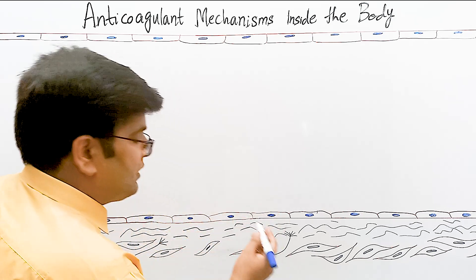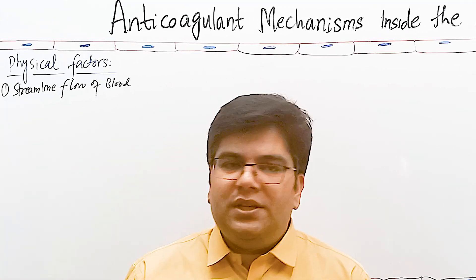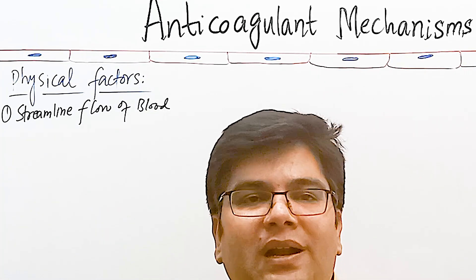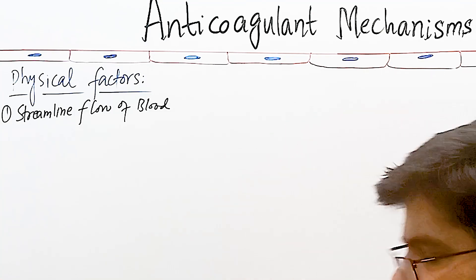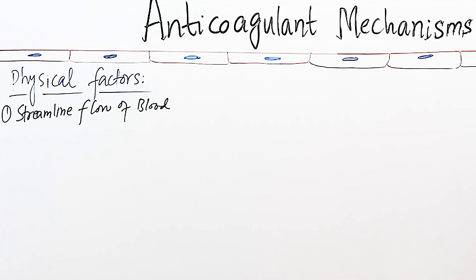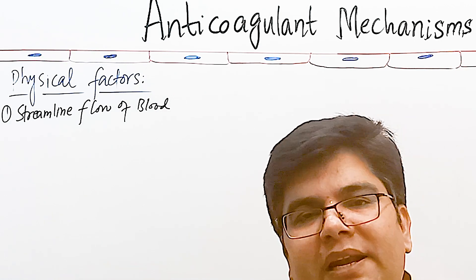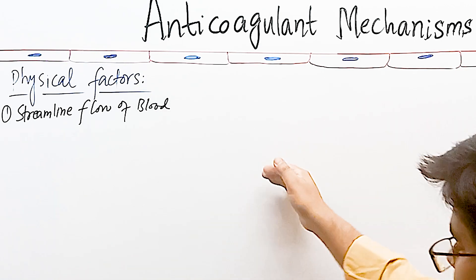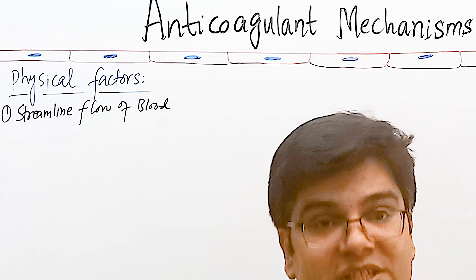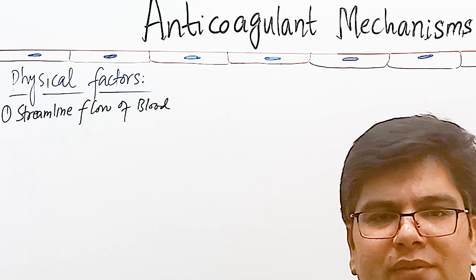First let's talk about the physical factors. The first factor is streamlined flow of blood. Blood flows in layers in our blood vessels, and when blood flows in a streamlined manner it gets fewer chances for the platelets and clotting factors to come in contact with the endothelial lining, which decreases the chances of clotting.